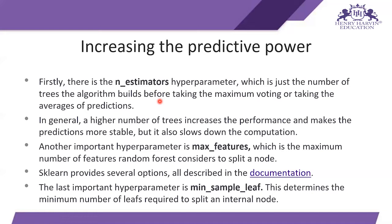In general, a high number of trees increases performance and makes predictions more stable, but it also slows down computation. As you increase the number of estimators, computation slows down. Another important hyperparameter is max_features, which is the maximum number of features Random Forest considers to split a node. Max_features, like the depth of the tree, provides several options — all described in the documentation, for which a link is provided.